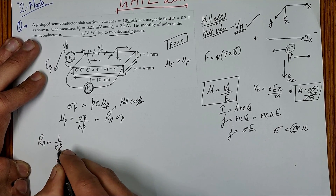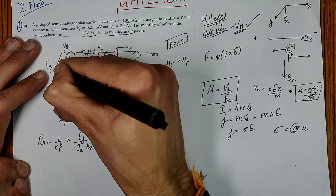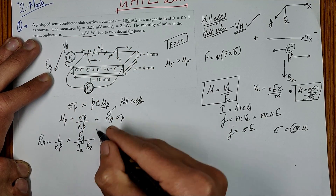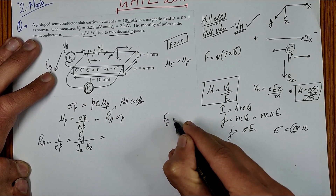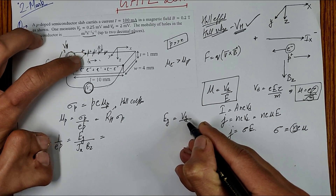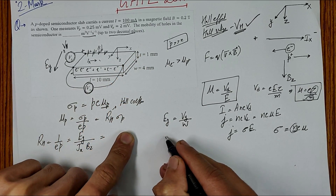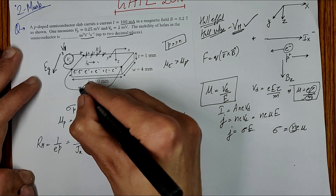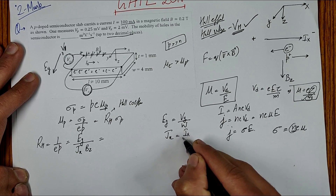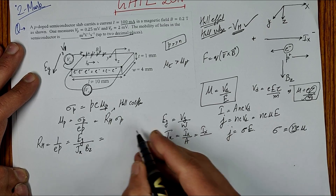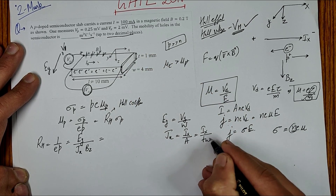The Hall coefficient RH = 1/(ep) is defined as Ey / (Jx · Bz), where Ey is the electric field produced, Jx is the current density, and Bz is the magnetic field in the perpendicular direction. Now Ey = Vy / w, where w is the width in the y-direction. And Jx = Ix / A = Ix / (t · w), where t is the thickness.